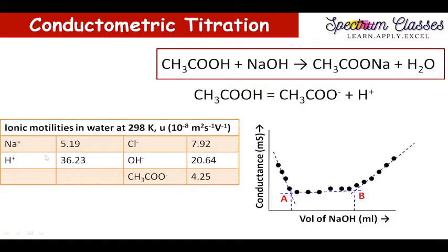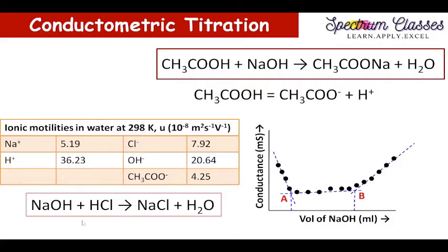Initially, the reaction between NaOH and HCl takes place, and NaOH reacting with HCl forms NaCl + H2O. In this case Na+ and Cl− are present, but H+ from HCl and OH− from NaOH have very high mobility values — because of these we are initially having high conductivity values. Since H+ is neutralized by OH−, the conductivity value decreases as we add NaOH from the burette one by one.